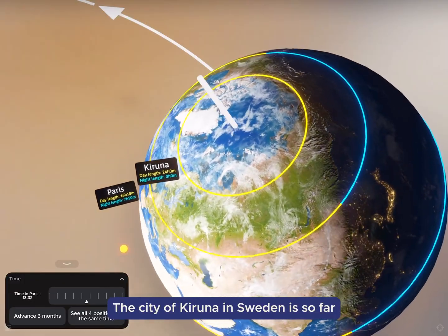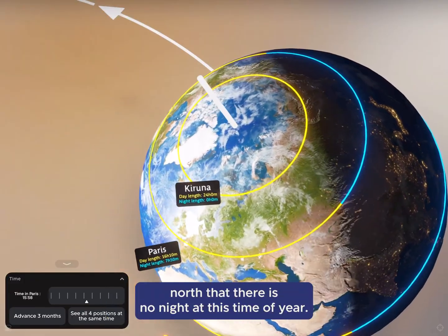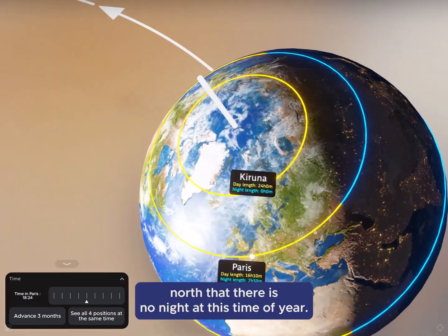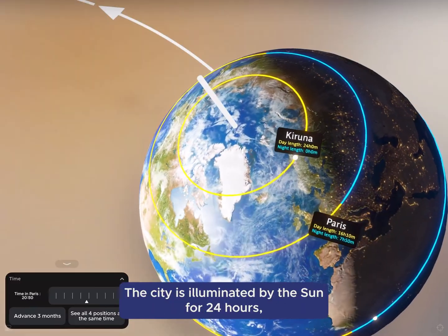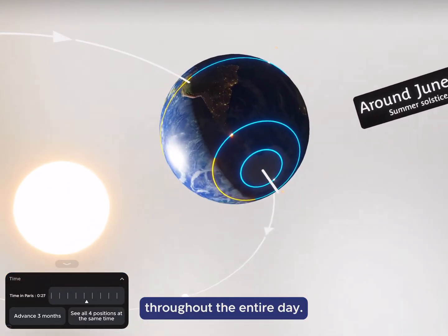The city of Kiruna in Sweden is so far north that there is no night at this time of year. The city is illuminated by the Sun for 24 hours throughout the entire day.